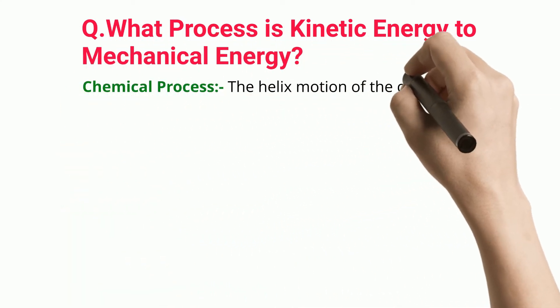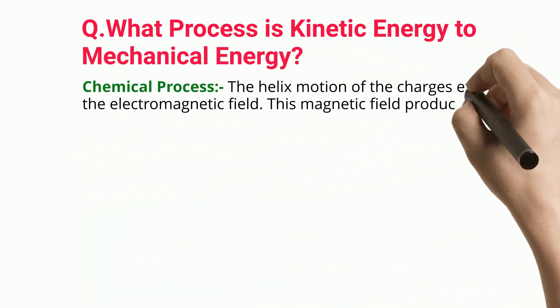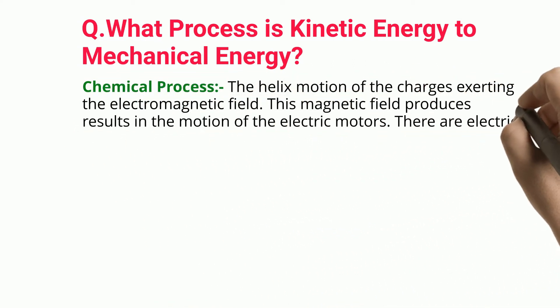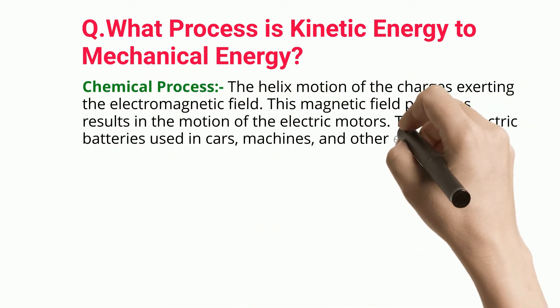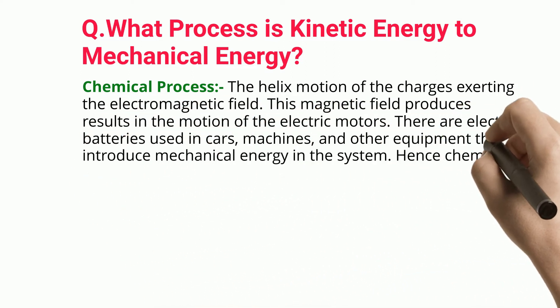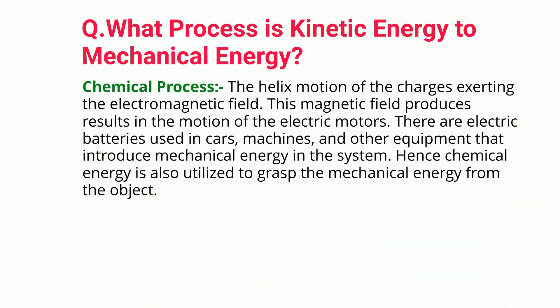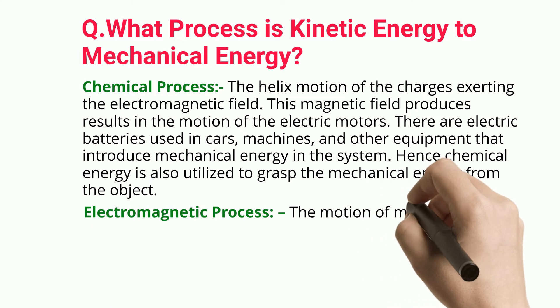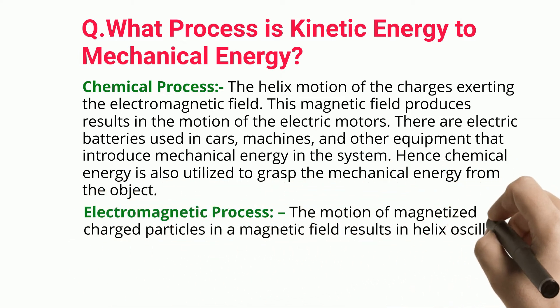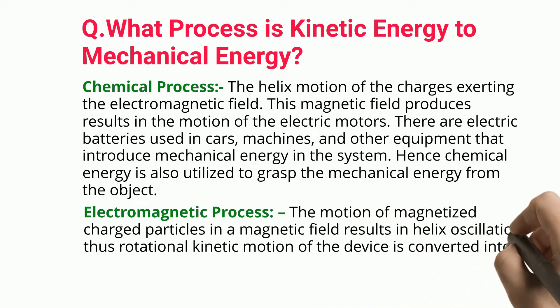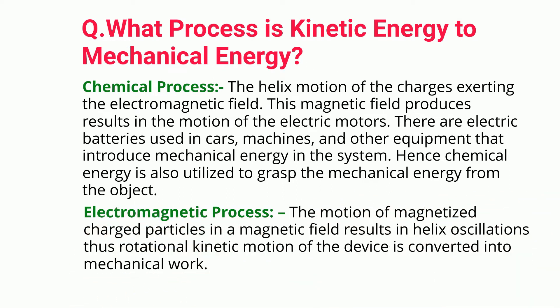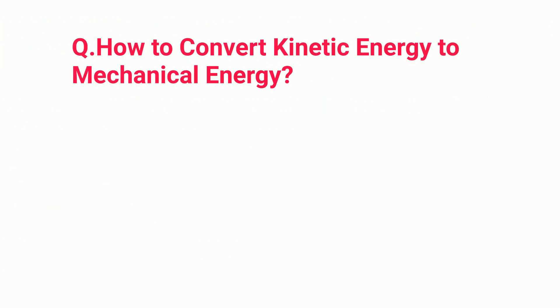Chemical process: The helix motion of the charges exerting the electromagnetic field produces results in the motion of electric motors. Electric batteries used in cars, machines, and other equipment introduce mechanical energy in the system. Hence chemical energy is also utilized to grasp the mechanical energy from the object. Electromagnetic process: The motion of magnetized charged particles in a magnetic field results in helix oscillations, thus rotational kinetic motion of the device is converted into mechanical work.